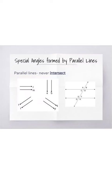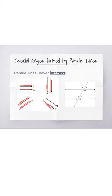Special angles notes. Special angles formed by parallel lines. Parallel lines never intersect. They could go horizontally, they could go vertically, they could even go on any diagonal. But they are always the same distance apart and will never ever touch or intersect.